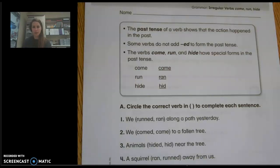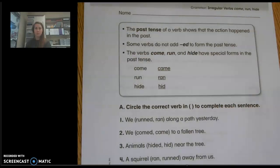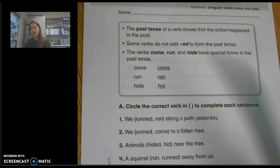So what makes them irregular is that you have to change the spelling to make them past tense. Oftentimes we just add -ed to make a word past tense, but in the case of come, run, and hide, we cannot add -ed to make it past tense. We must change the spelling.